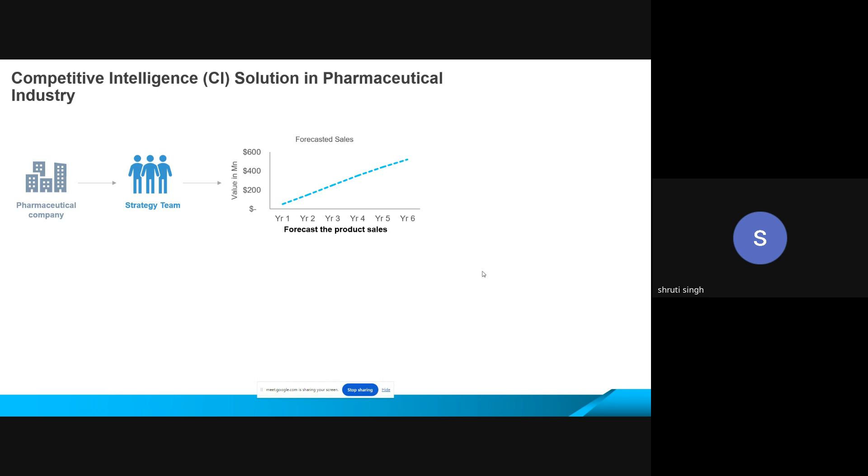This was the forecasted sales by the in-house strategy team. Okay, when in actual, when reality hit, the product when it was launched into the market by the sixth year, the product revenue was only 200 million dollars versus what was projected as 600 million dollars. Now can you tell me some of the reasons why this happened?